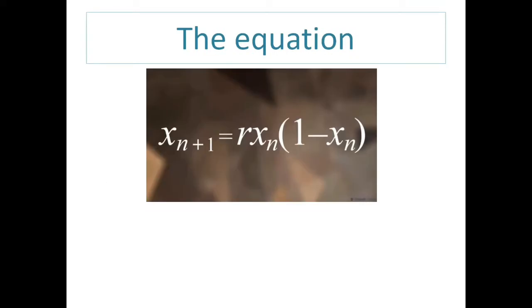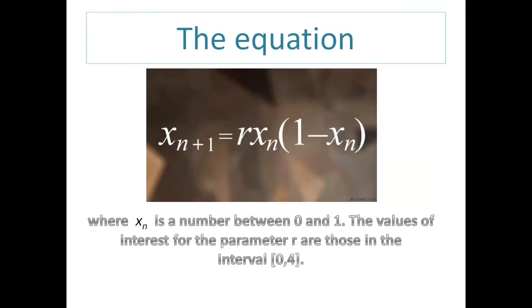Moving on to the equation, which is xn+1 = rxn(1-xn), where xn is a percentage of theoretical maximum. So it is a number between 0 and 1. And r is the rate whose values of interest lies in the interval 0 to 4.